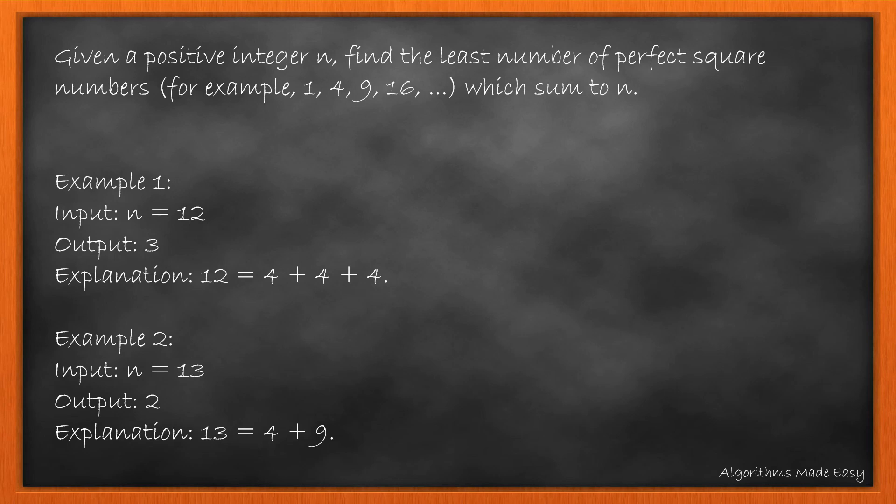In example 1, number 12 can be made adding 3 fours. In example 2, 13 can be made by adding 4 and 9, so we return 2.